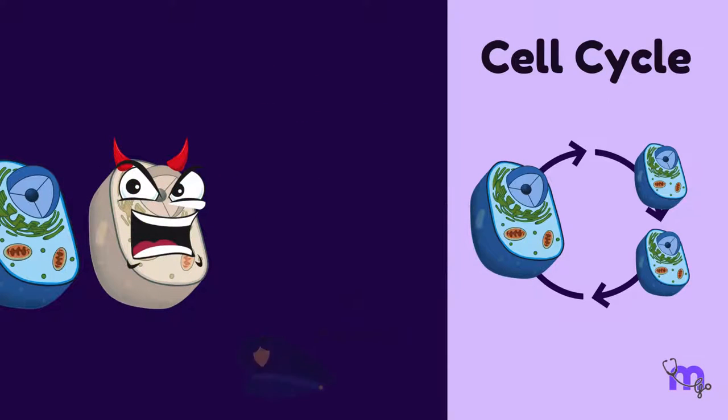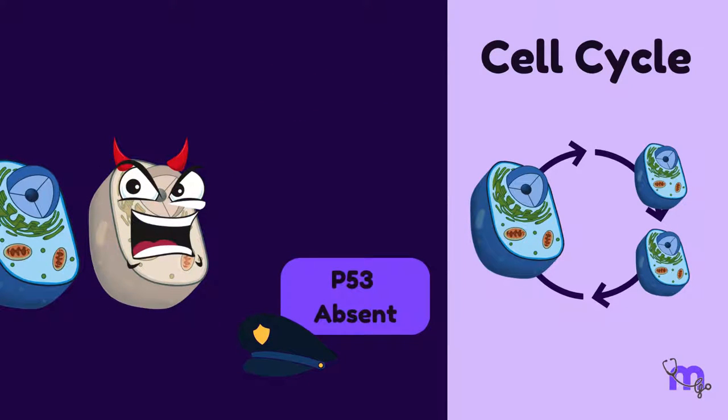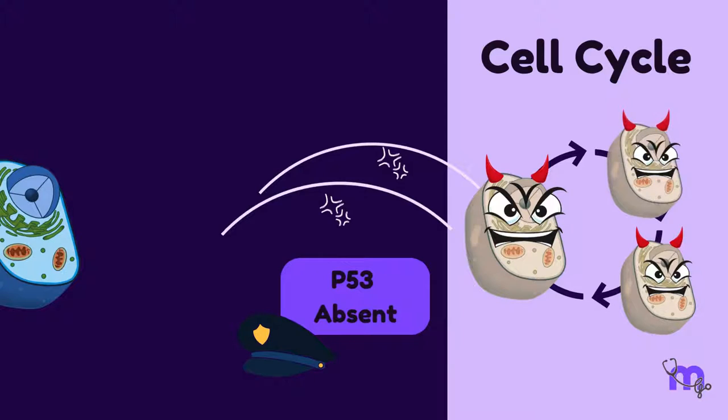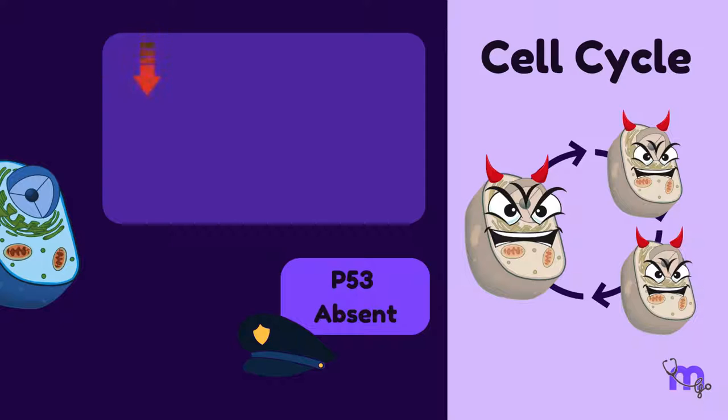So what happens if the p53 gene is mutated or absent? Cells that are supposed to die by apoptosis continue to live. This allows them to mutate and cause cancer. Therefore, p53 loss causes decreased apoptosis and increased risk of cancer.